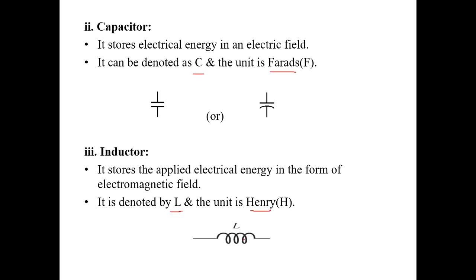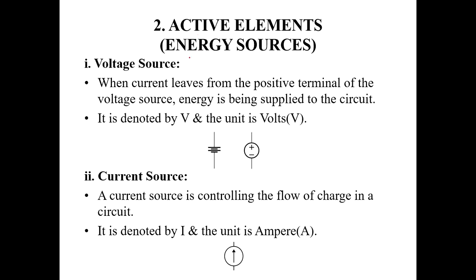Active elements are also called energy sources. We know that active elements include voltage and current sources. For a voltage source, when current leaves from the positive terminal, energy is being supplied to the circuit. The current flows from the positive terminal to the negative terminal. It is denoted by V, and the unit is volts.